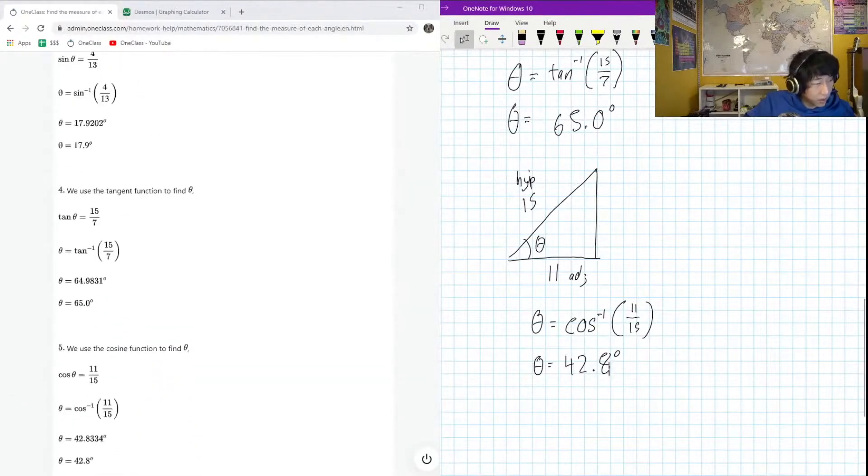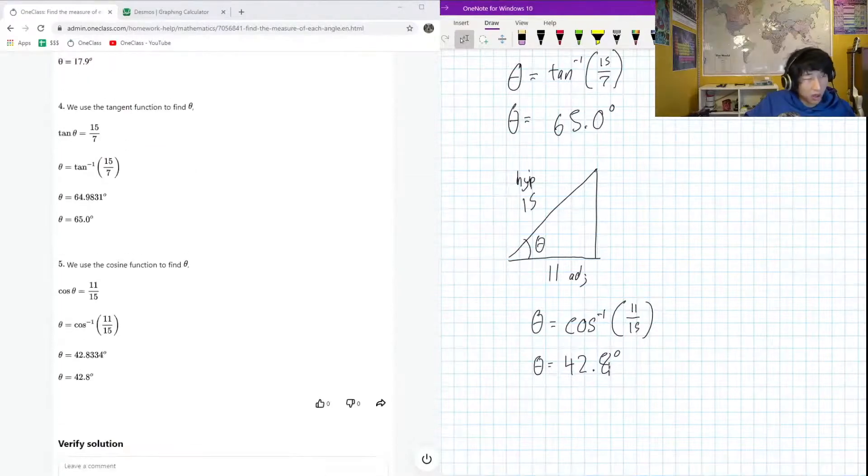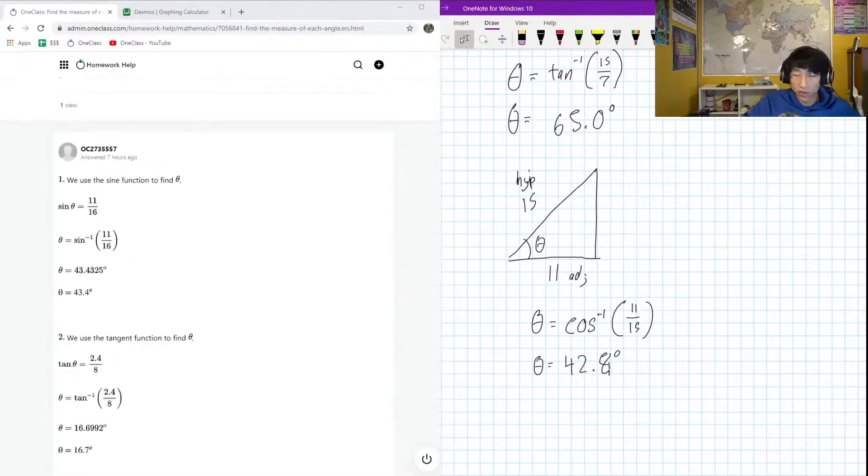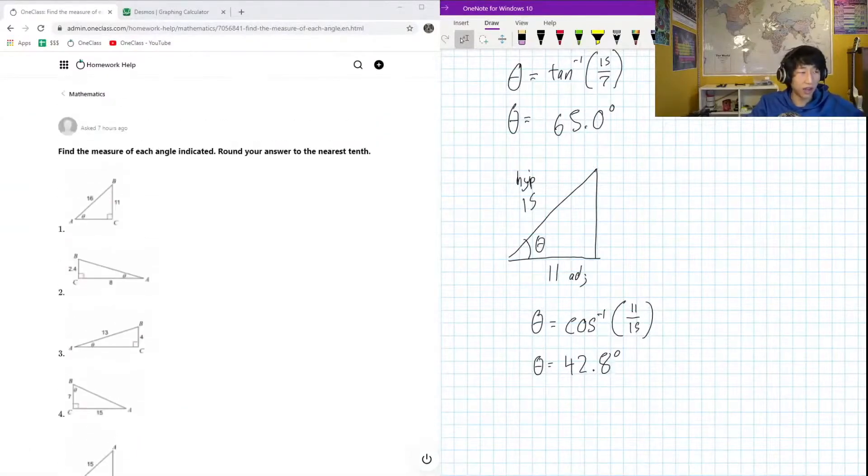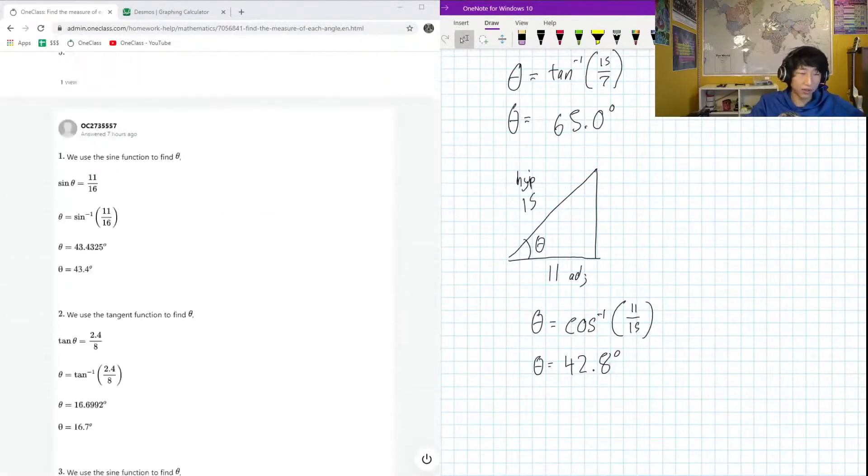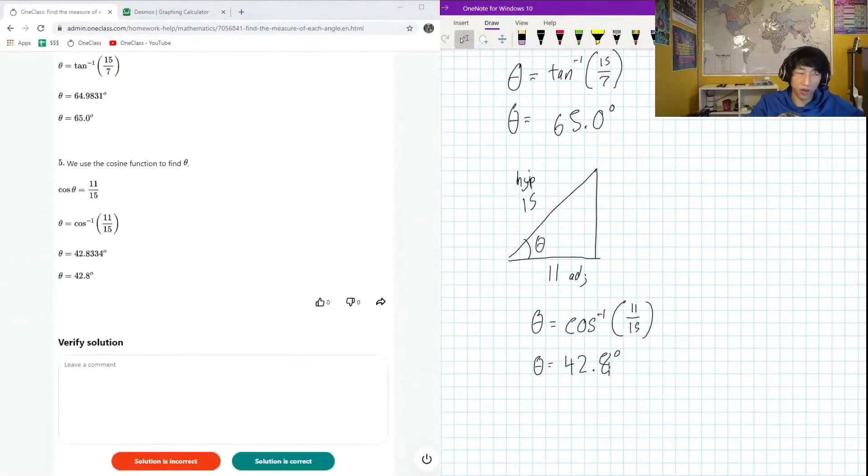So yeah, this is a general procedure - the power of SOHCAHTOA and right angle triangle trigonometry. We can find all of the angles, and rounding them to the proper number of digits is also important. But otherwise guys, the solution is good, good job, nice high five.